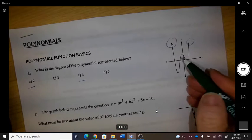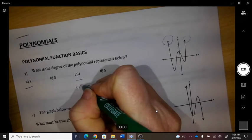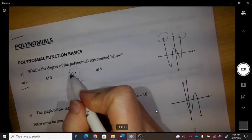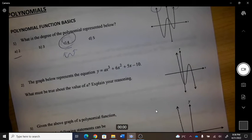it's even, and because it's a W shape, we know that it is fourth degree. The graph below represents